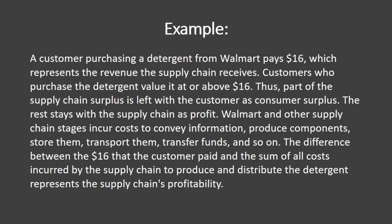Let's have a look at an example. A customer purchases detergent from Walmart and pays $16, which represents the revenue the supply chain receives. Customers who purchase the detergent value it at or above $16. Thus, part of the supply chain surplus is left with the customer as consumer surplus, and the rest stays with the supply chain as profit.